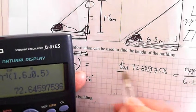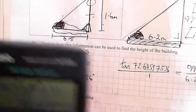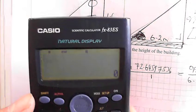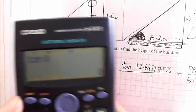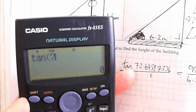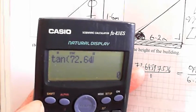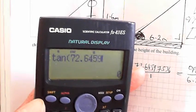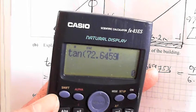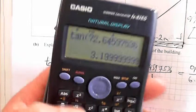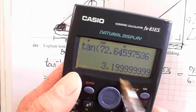Now this is written as a fraction, so I'm going to write that as a fraction just for now. So we've got tan of 72.64597536. Alright, 3.199999.